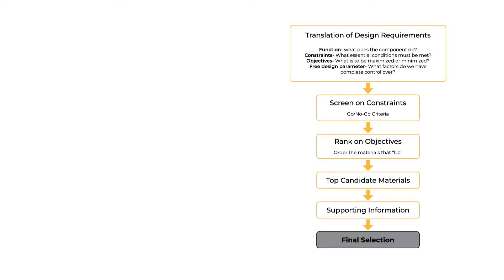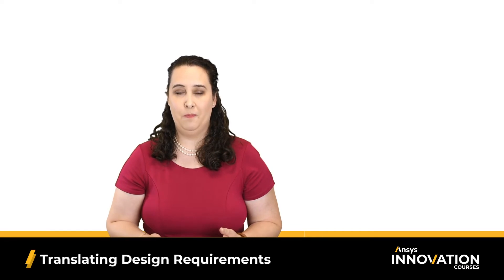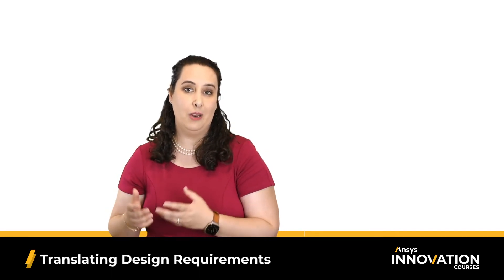After these steps, we're left with a few top candidate materials. At this point, additional research is needed, such as safety standards, combined with simulation and other design considerations to make the final material decision. So you can see that we have a nice systematic way of going through our various design criteria to get from thousands of engineering materials down to a few top candidates. One tricky aspect of this methodology is the translation step — getting from our design problem statement into these key constraints and objectives.